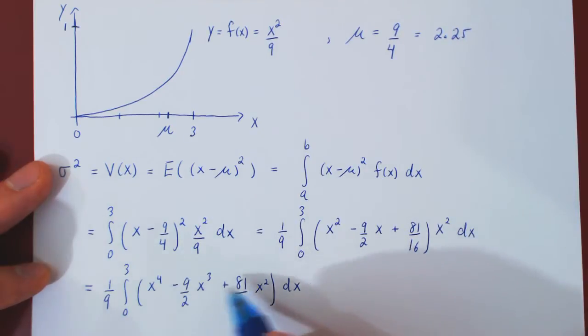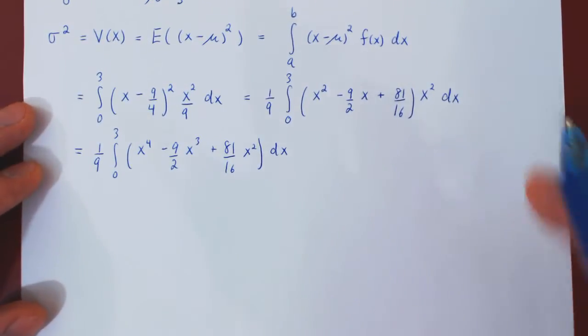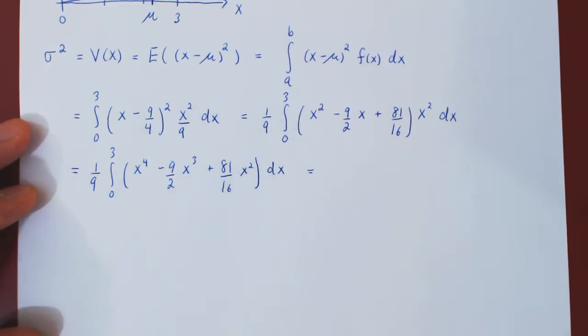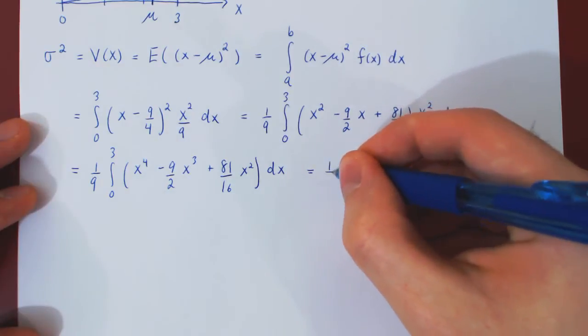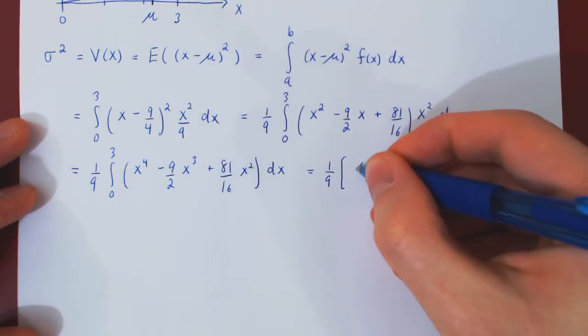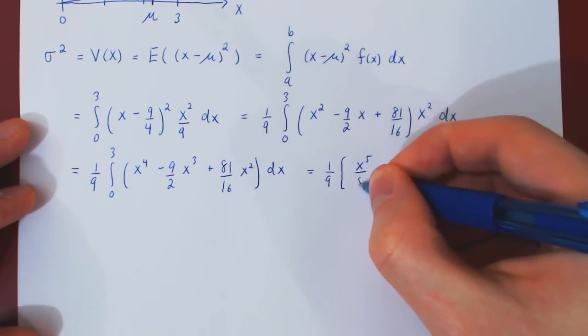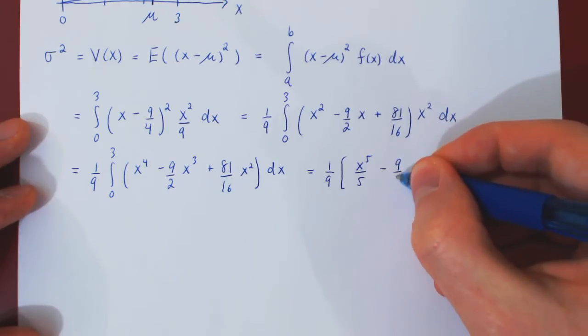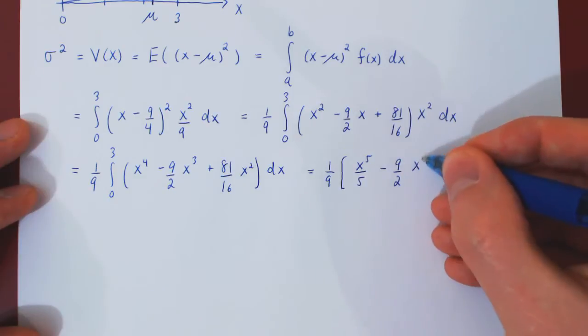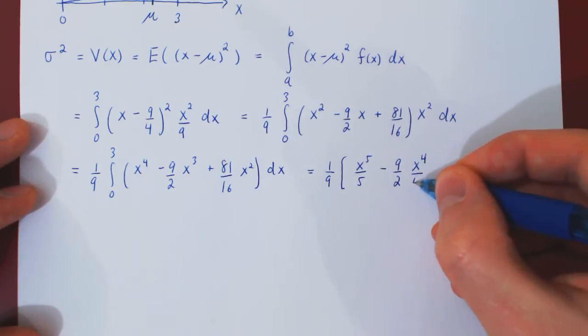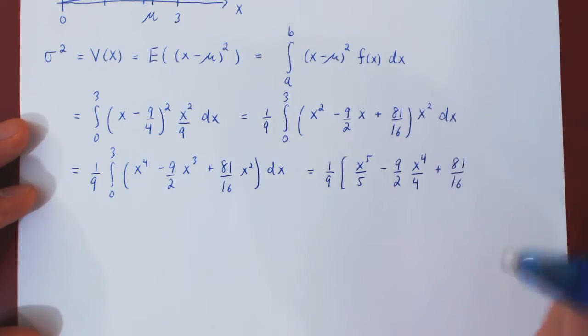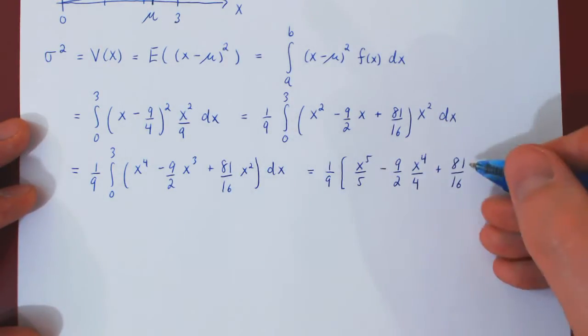As we now have a simple polynomial, we can integrate with the power rule, leaving the 1 over 9 as a constant multiple. So, power rule in x4 gives us x to the 5 over 5, minus 9 over 2, power rule in x cubed is x4 over 4, plus 81 over 16, power rule again on x squared will give you x cubed over 3.